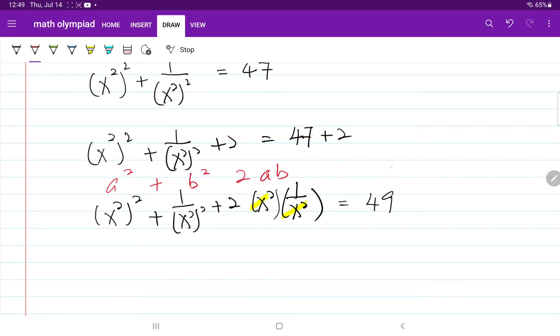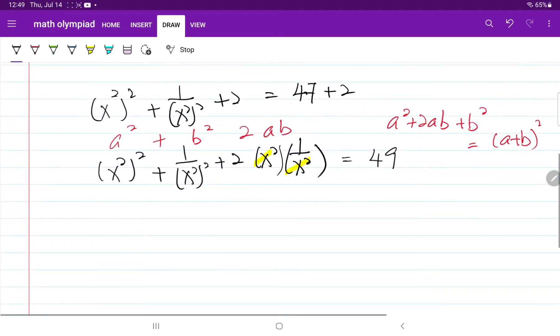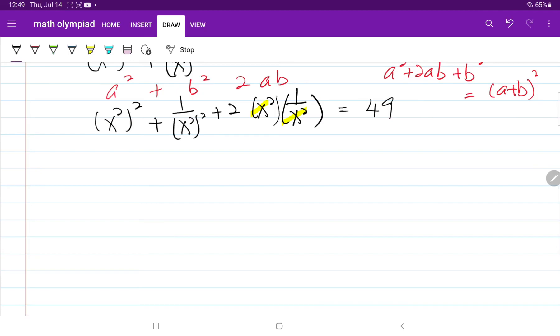And when we have a squared plus 2ab plus b squared, that equals a plus b, the whole thing squared. So we are going to go ahead and rewrite this equation into that particular form.